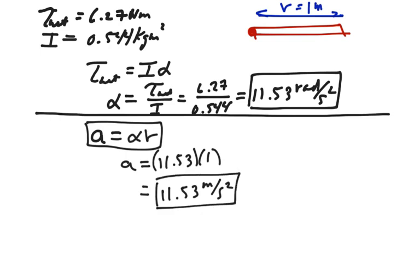So the linear acceleration of the end of this rod is actually greater than the acceleration of gravity. It is 11.53 meters per second squared. And that is our answer. Thank you.